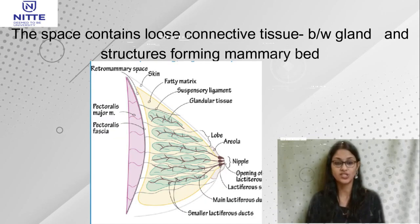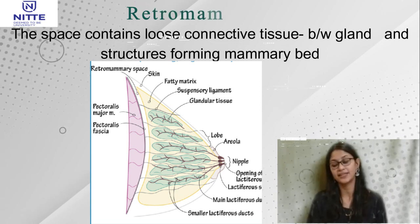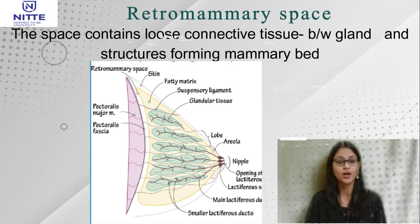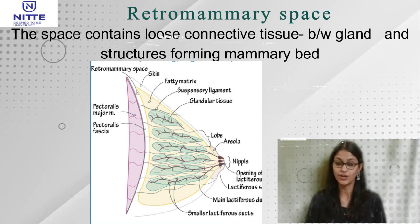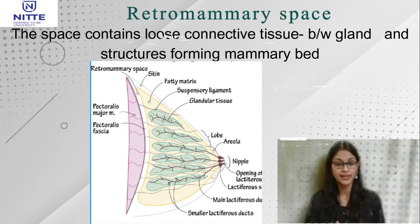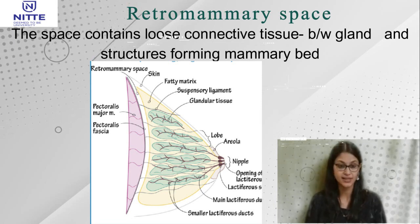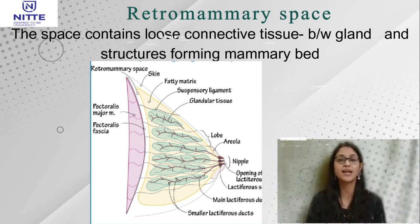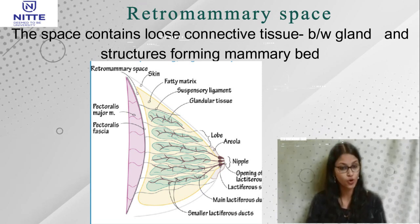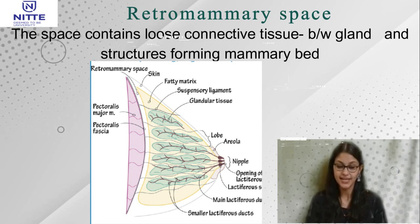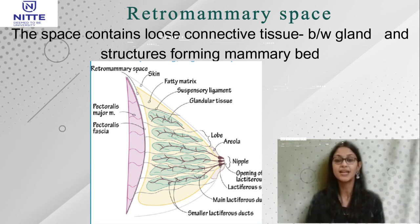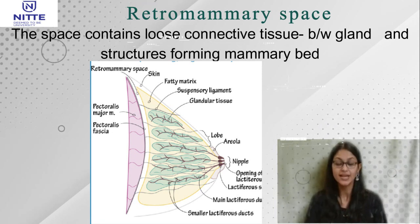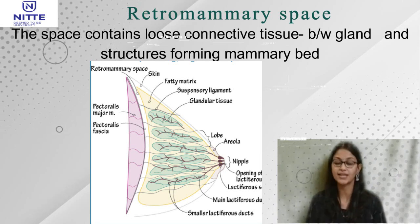The pectoralis major, serratus anterior, and external oblique aponeurosis are separated from the breast tissue by a space called the retromammary space. 'Retro' means behind and 'mammary' refers to the mammary gland. This space contains loose connective tissue between the gland and the structures forming the mammary bed, and its importance is that the breast can be freely moved over the pectoralis major muscle.